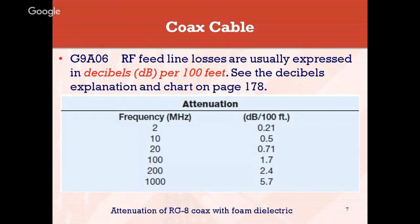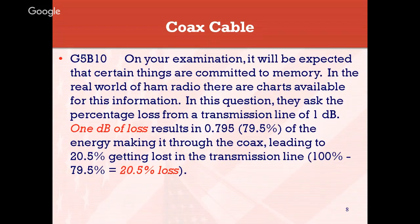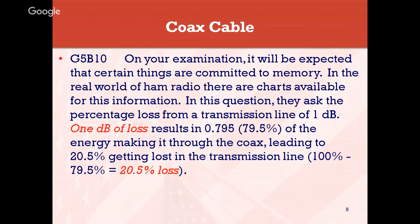For the examination, certain things are expected to be committed to memory. In the real world of ham radio, charts are available for this information. Your real education starts once you get licensed. In this question, they ask about the percentage of loss from a transmission line of 1 dB. One dB of loss results in about 79.5% of the energy making it through the coax, meaning 20.5% is lost in the transmission line. So 100% minus 79.5% equals 20.5% loss.